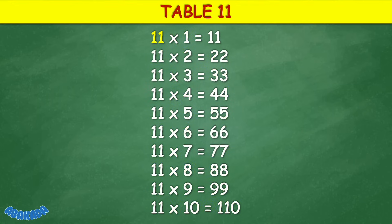Table 11: 11 times 1 equals 11, 11 times 2 equals 22, 11 times 3 equals 33, 11 times 4 equals 44, 11 times 5 equals 55, 11 times 6 equals 66, 11 times 7 equals 77, 11 times 8 equals 88, 11 times 9 equals 99, 11 times 10 equals 110.